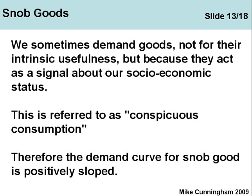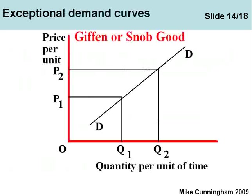Therefore the demand for snob goods is positively sloped, so the Giffen Good and the Snob Good both have the same type of demand relationship. As the price of Porsches increases, they become even more of a snob good. If a Porsche were the same price as a Fiesta or a Corsa, it would be a good car but it wouldn't have the same appeal. So snob goods — or Veblen goods — and Giffen goods both have upward-sloping demand curves.